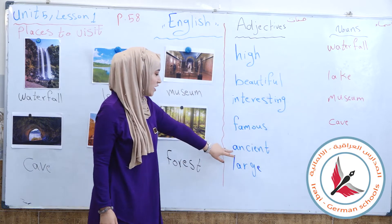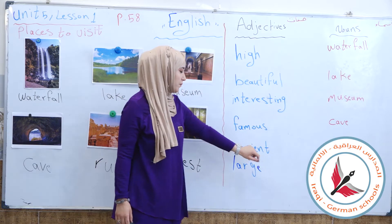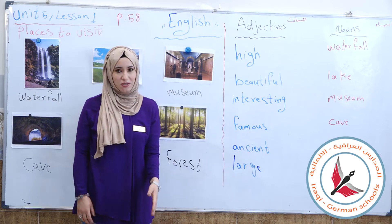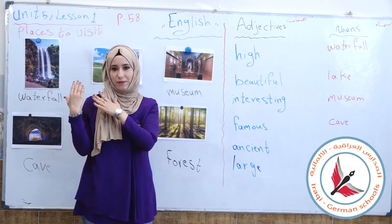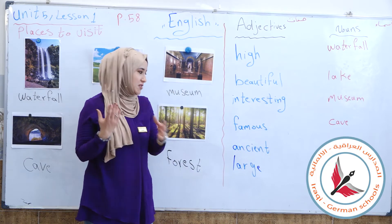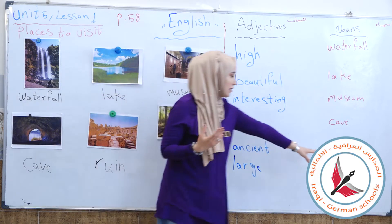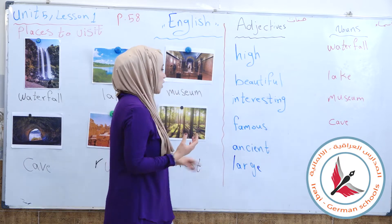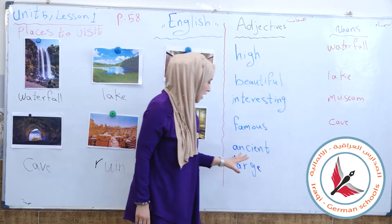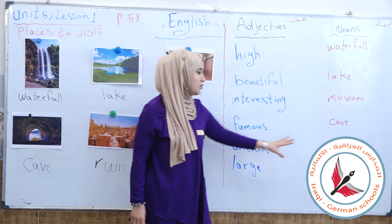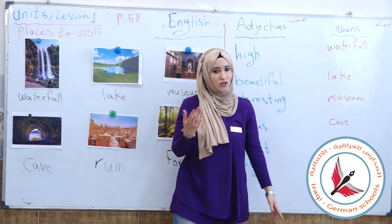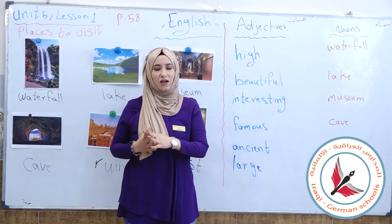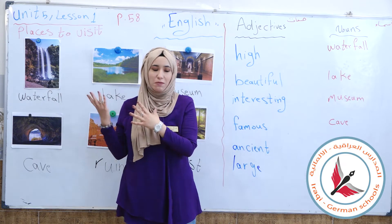Here we have ancient. Ancient means قديم — something old. This describes the ruin, which is an old archaeological place. So we say: ancient ruin.